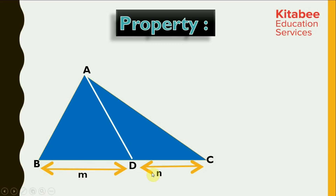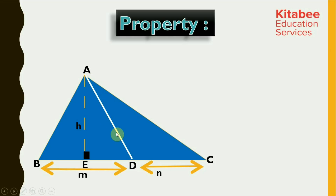BD is equal to M units, while DC is equal to N units. Now, let's draw a perpendicular from the vertex A on the base BC. This is the perpendicular or the height which is drawn on BD. Height or altitude is nothing but the shortest distance between the vertex and the base.